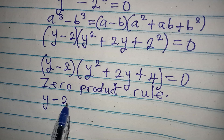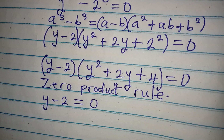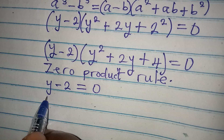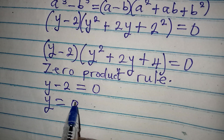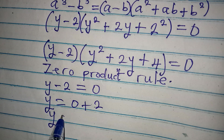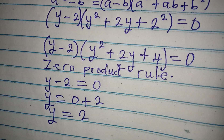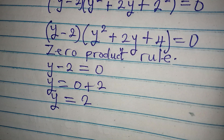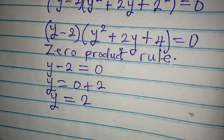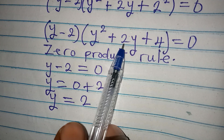From the linear expression, y - 2 = 0 gives y = 2. This is our first solution, y₁ = 2. To get the other solutions, we take the quadratic expression.